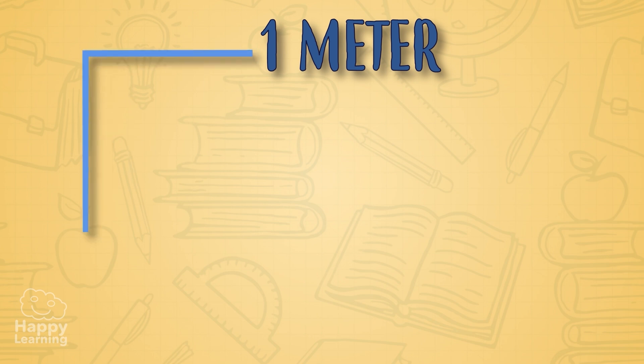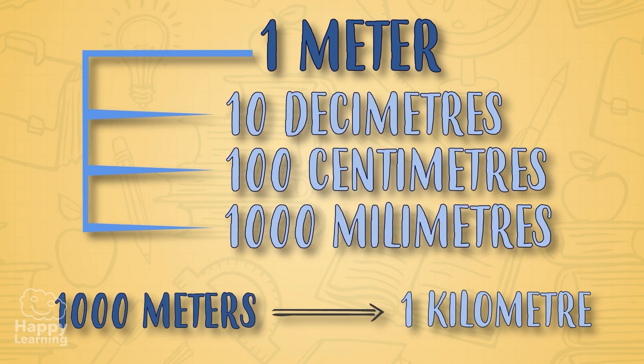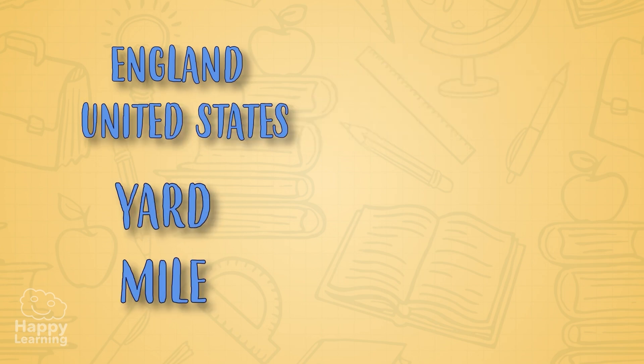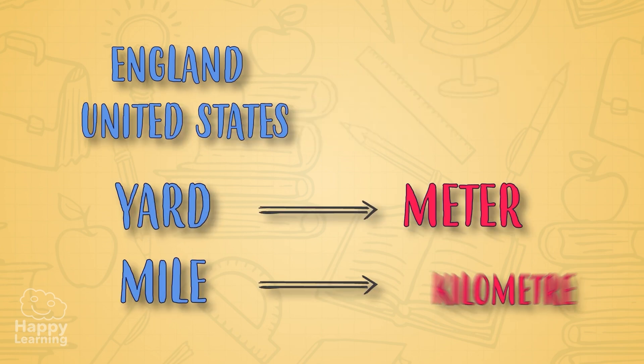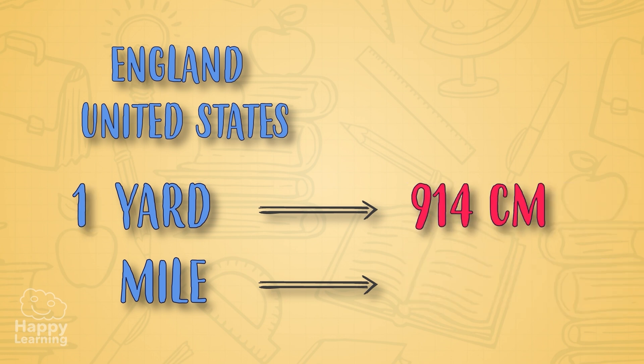Well, now we've learned the units to measure longitude. There's something you need to bear in mind: not all countries use the meter as a means of measuring longitude. In England and United States they use yards and miles instead of meters and kilometers. A yard is equal to 914 centimeters and a mile is 1,609 meters.